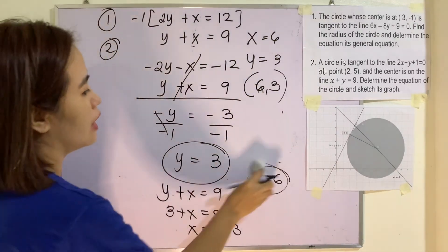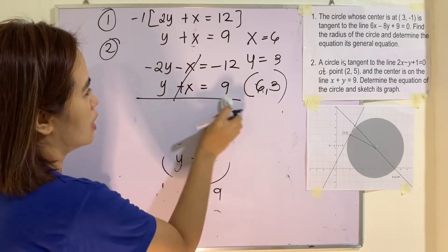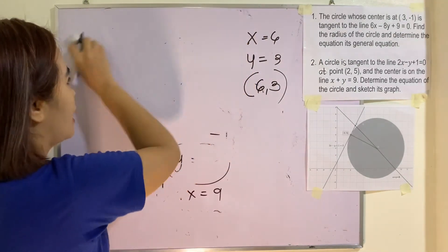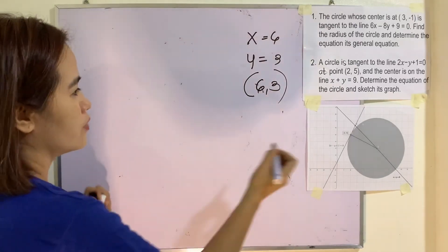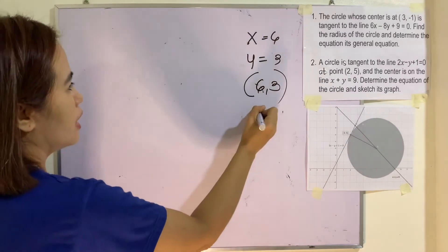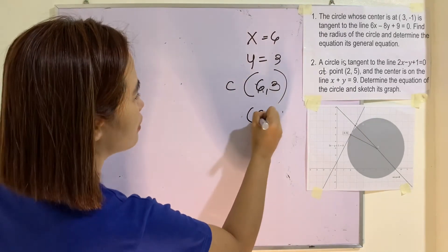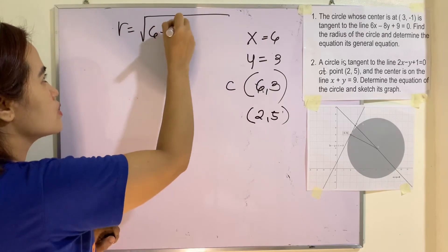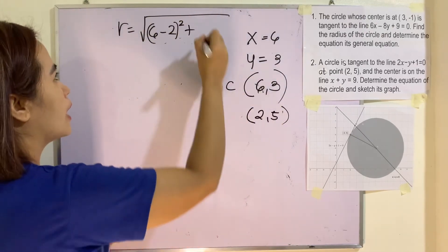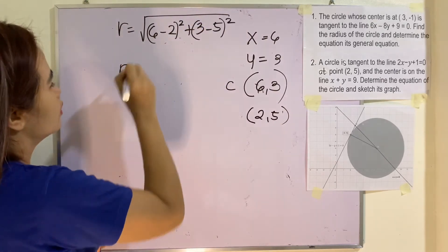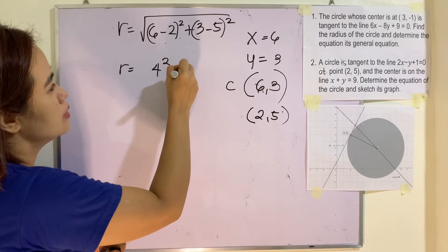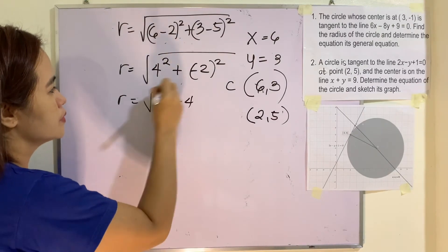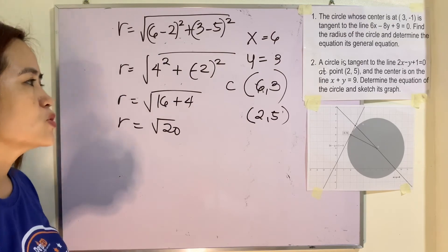Now we find the radius using the distance formula between the center (6, 3) and the point of tangency (2, 5). R equals the square root of (6 minus 2)² plus (3 minus 5)², which equals the square root of 4² plus (negative 2)², giving the square root of 16 plus 4, equals the square root of 20, or 2 square root of 5.